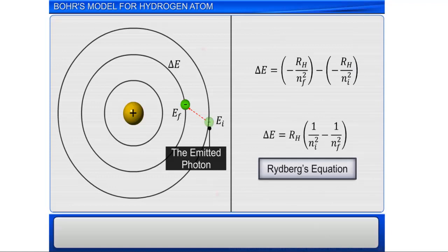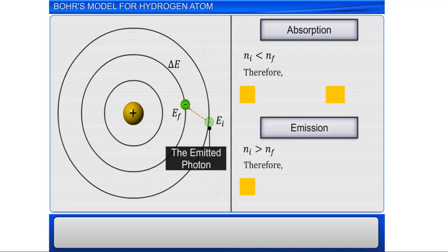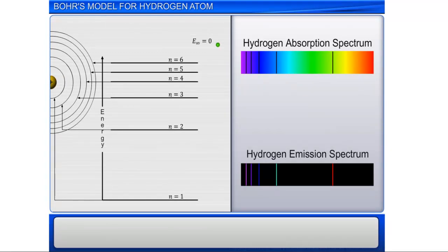Note that, in case of absorption of energy, delta E is positive, and in case of emission, delta E is negative. Thus, each spectral line in absorption or emission spectrum can be associated to transition of states by the electron of a particular hydrogen atom.